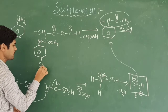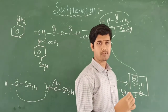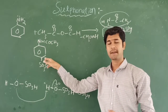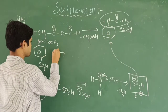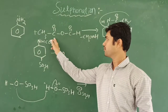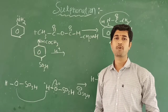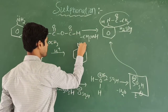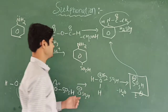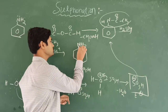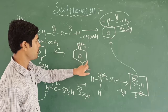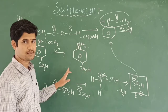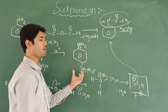The SO₃H electrophile attacks at the para position, giving the product NHCOCH₃ at one position and SO₃H at the para position. After hydrolysis of the acetyl protecting group, the final product is para-aminobenzene sulfonic acid — this is the product obtained from the sulfonation of aniline.